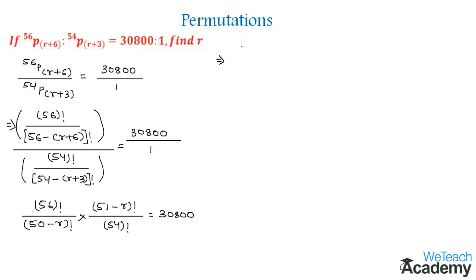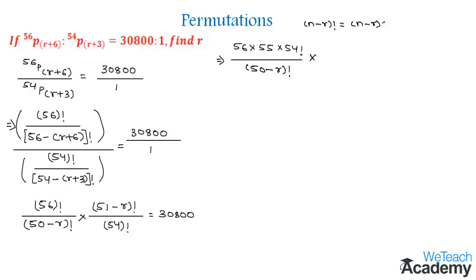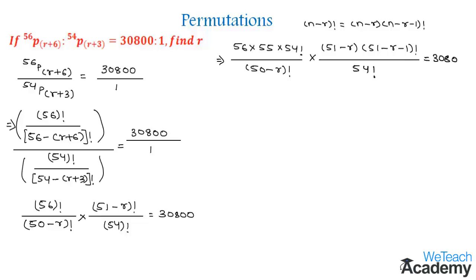56 factorial can be written as 56 into 55 into 54 factorial, divided by (50 minus r) factorial. In the numerator, (51 minus r) factorial is in the form (n minus r) factorial, which can be written as (51 minus r) into (50 minus r) factorial, divided by 54 factorial, equal to 30800.